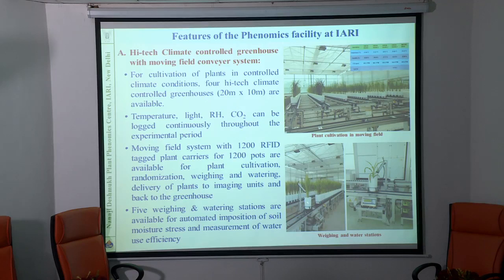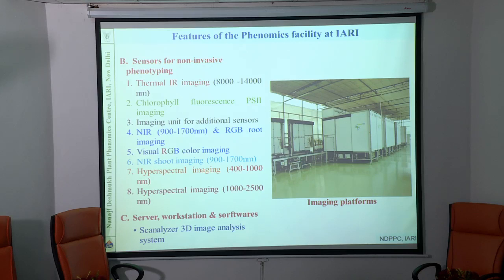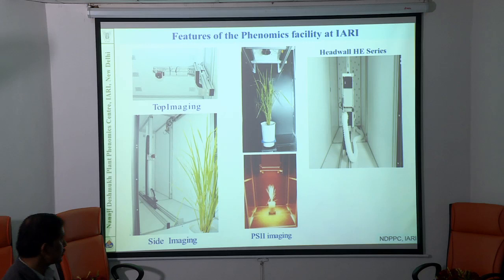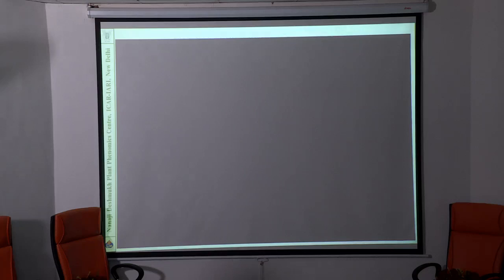In each greenhouse, plants are daily weighed and watered. You know daily how much water each plant takes — morning and evening you measure total transpiration. You can calculate how much water the plant uses. These are the different sensors placed in the imaging unit. Once the plant goes in, the image is taken from the top and then from the side, and the plant can be lifted and rotated in different directions to capture information from different sides, because plants do not have the same structure on all sides.